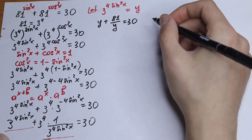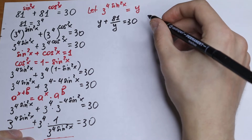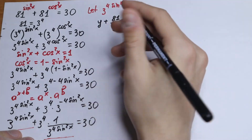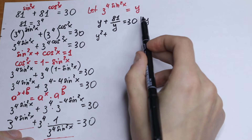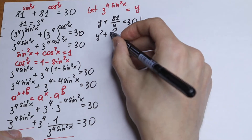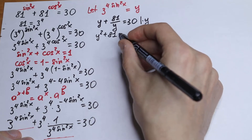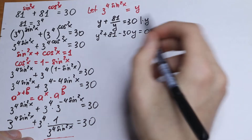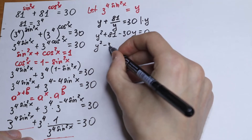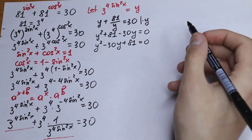This is a great case — we multiply both sides by y and we get a quadratic equation. We have y² plus 81 minus 30y equal to 0, which rearranges to y² − 30y + 81 = 0. A classic quadratic equation.